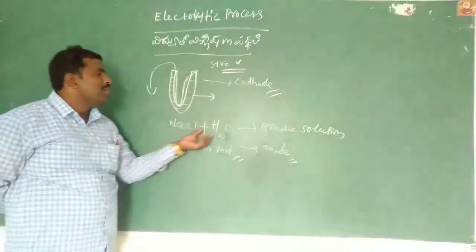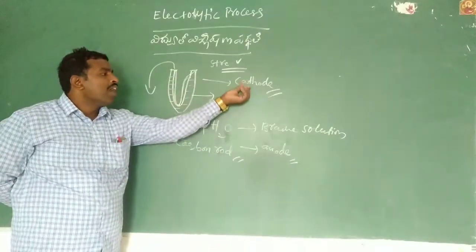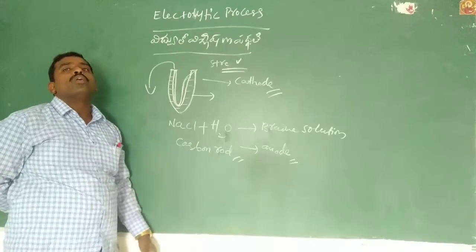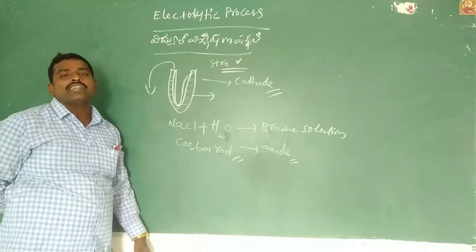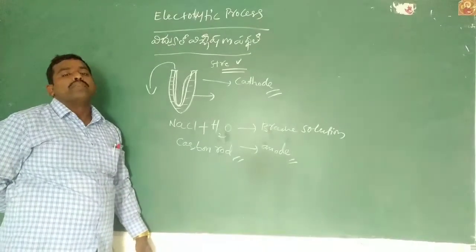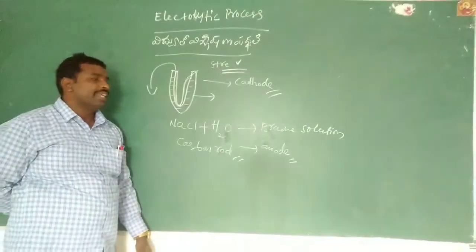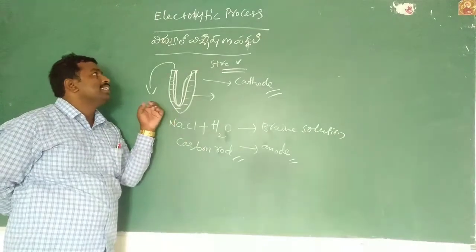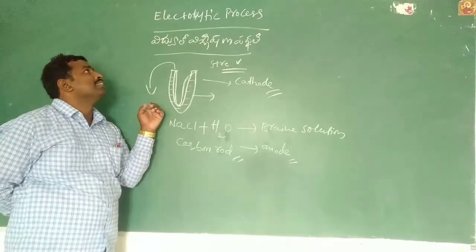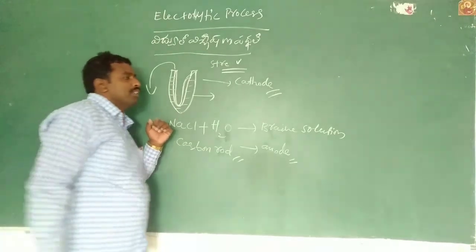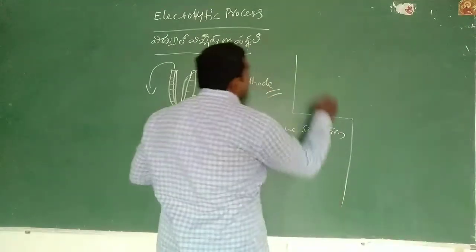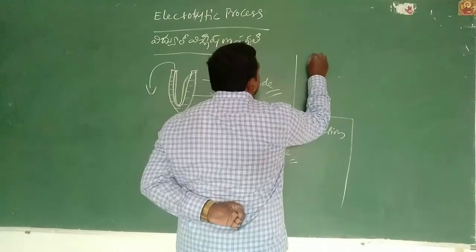At the anode, chlorine is liberated. So this processing is called the electrolysis process — what is referred to here as the electromagnetic process. There is a given chemical reaction for this.